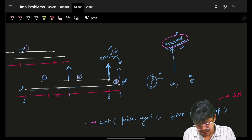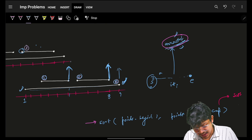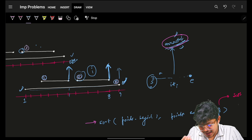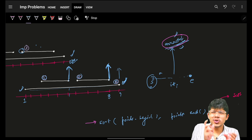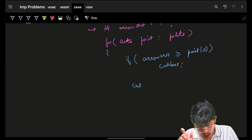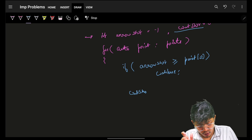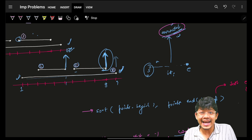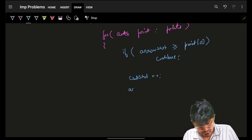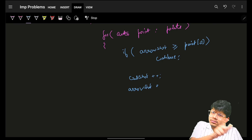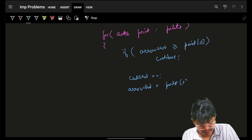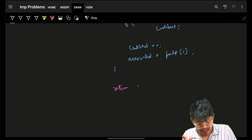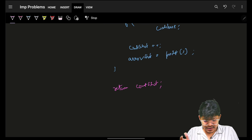If the current interval's start is more than the last arrow shot, I need one more shot. So increase count by one, and update the new arrow shot location to be the end of this current interval — that's point index one. This gives us the minimum number of count shots.